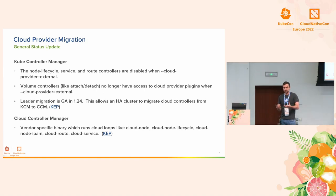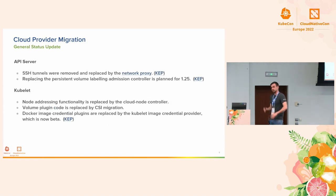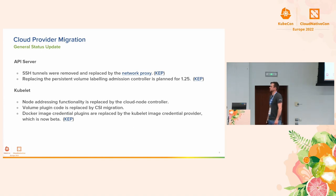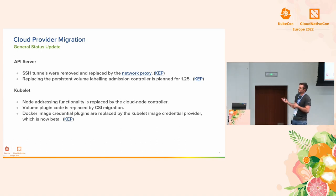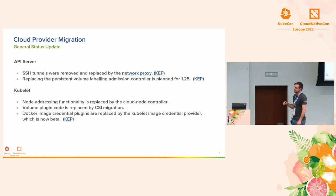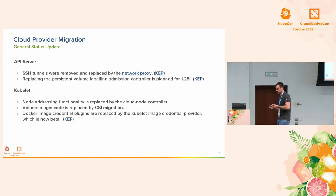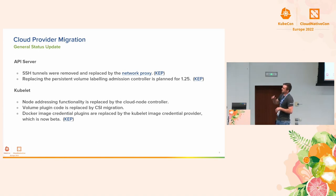The cloud controller manager is the vendor-specific component that replaces those control loops in the Kube controller manager. There are other components involved with this migration effort. The first is the API server. There are some lesser-known features considered part of the cloud provider migration effort — one being SSH channels, which was really only used by Google and doesn't involve cloud-provider-specific SDK calls. Because it was specific to one cloud, we're combining it with this effort. We've already extracted that from the API server, and it's being replaced by the network proxy.